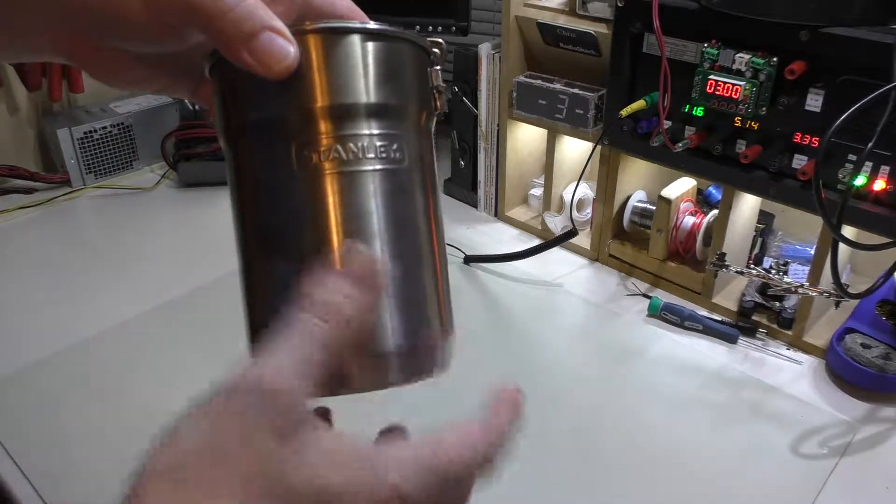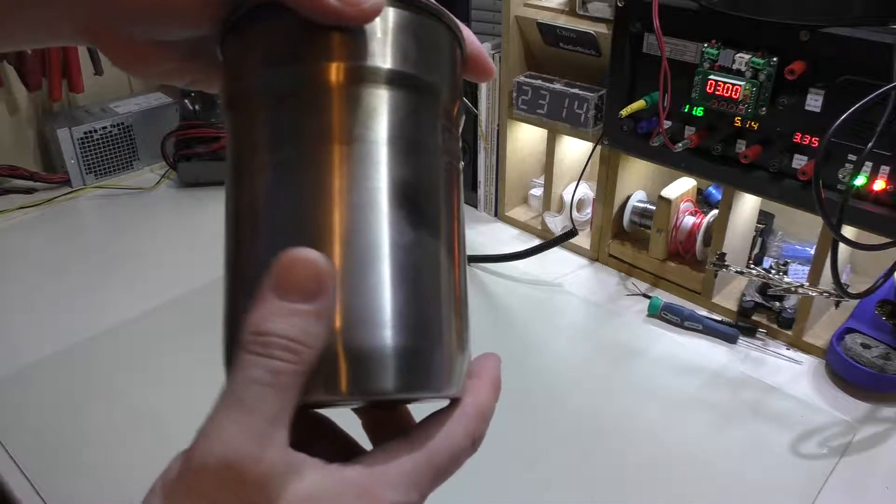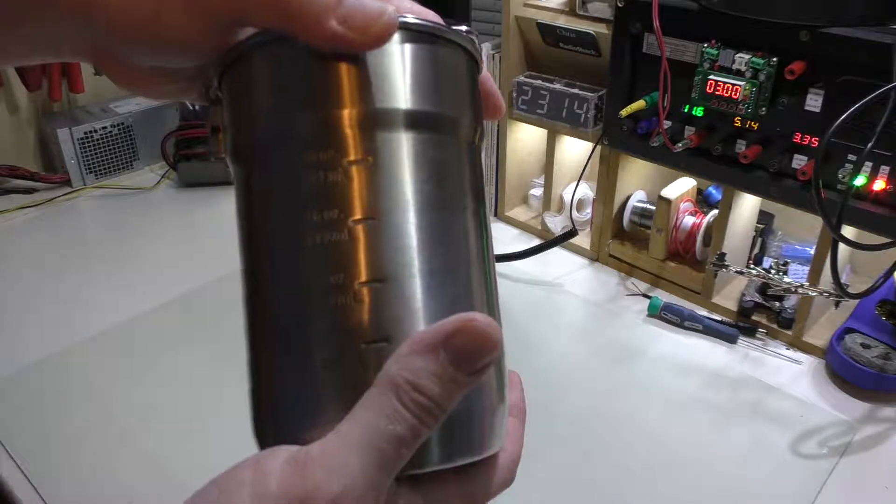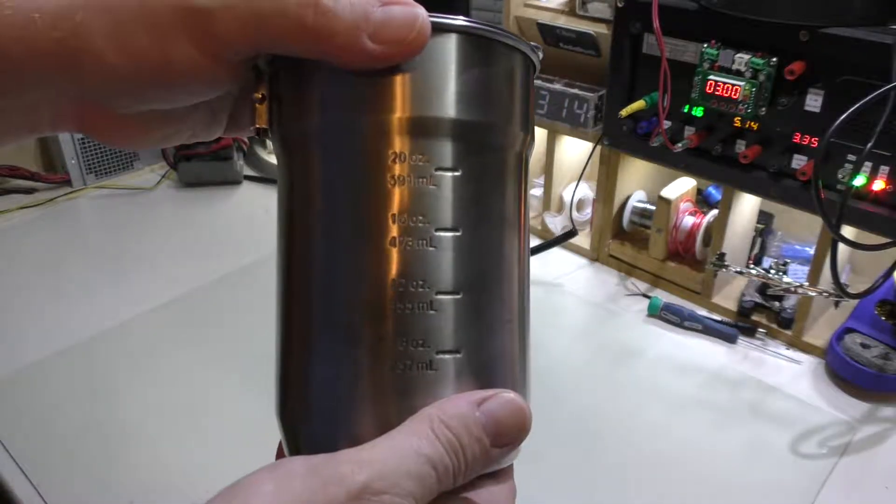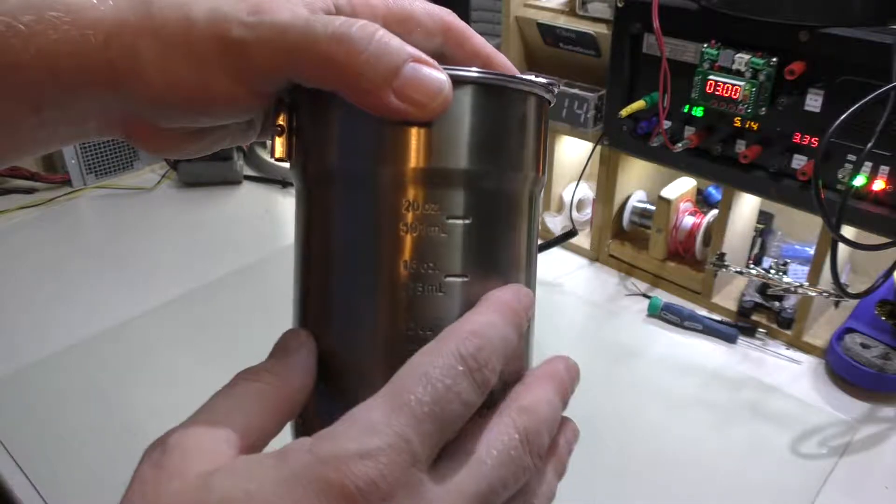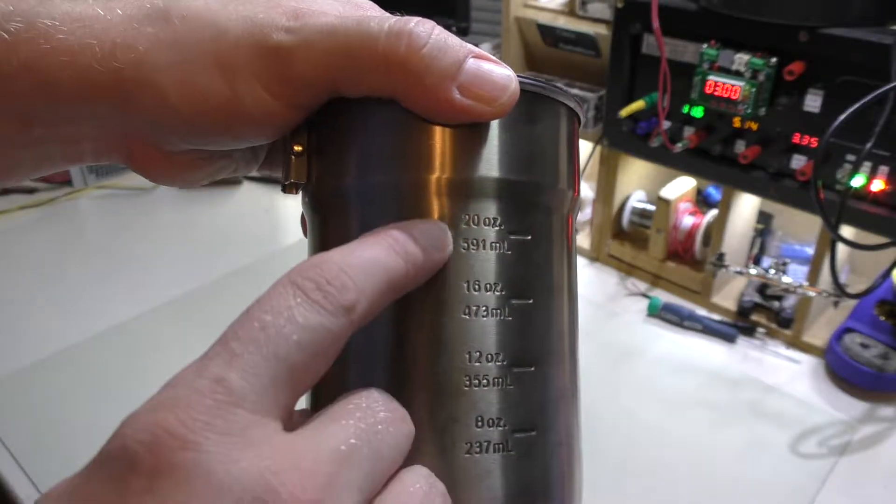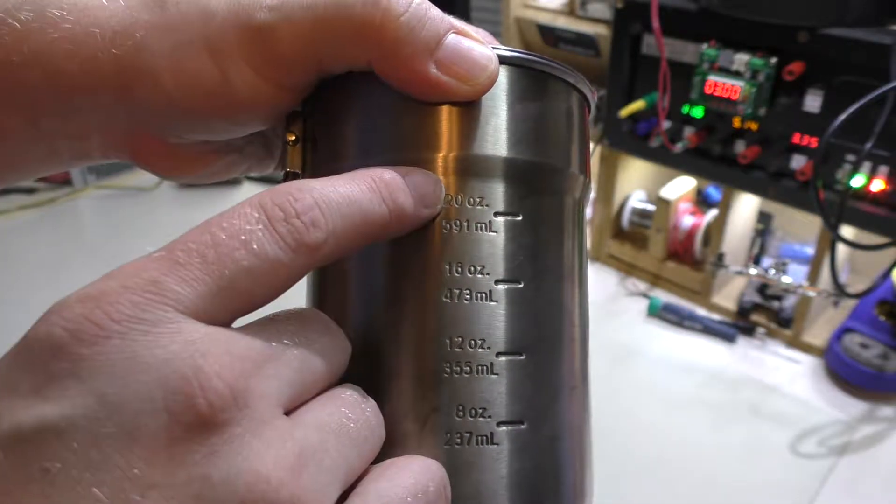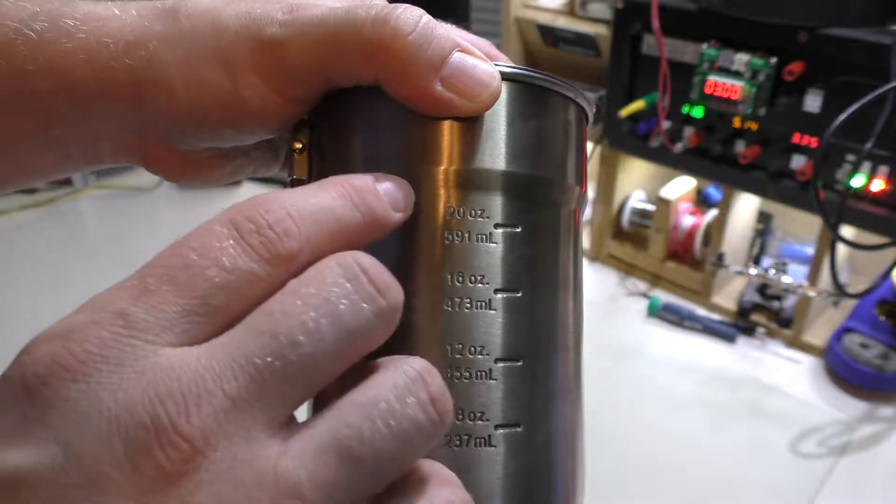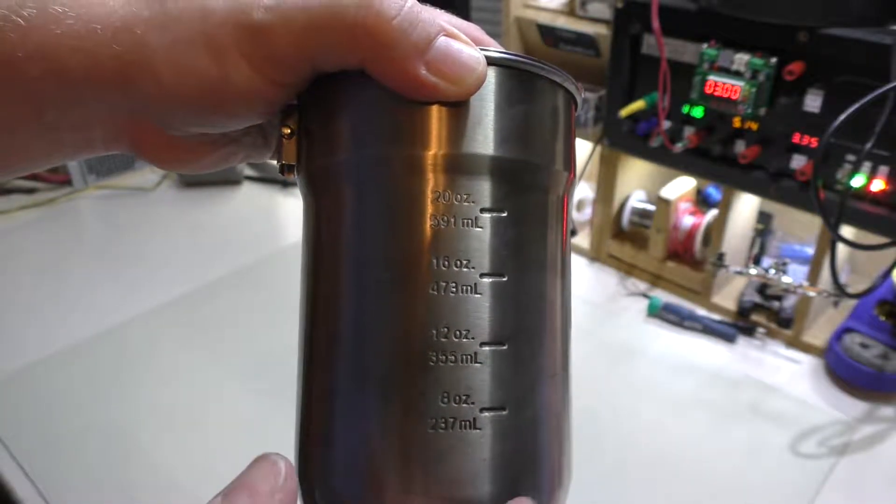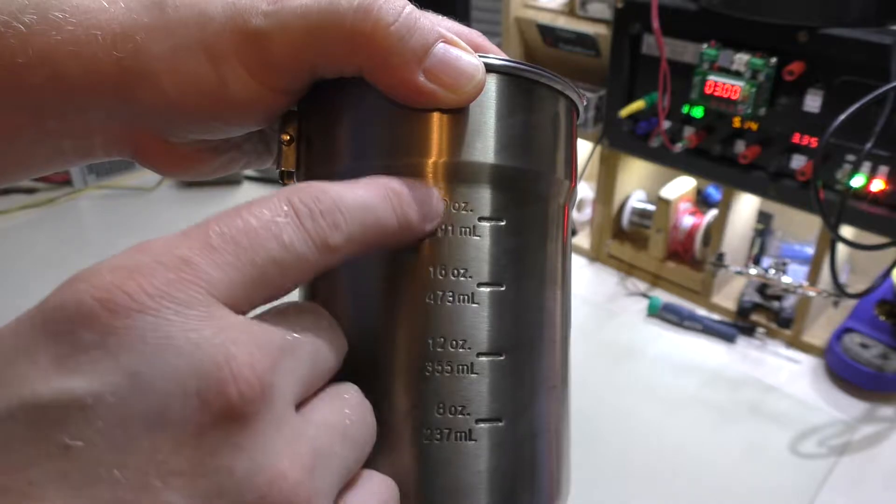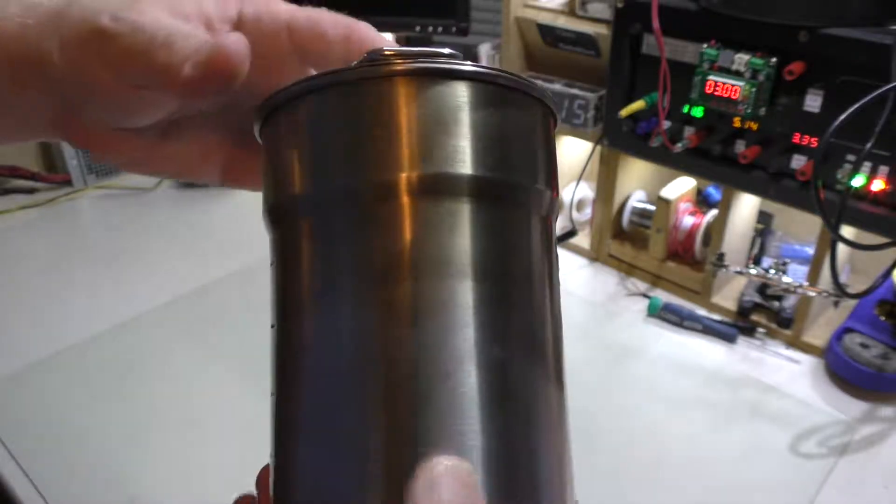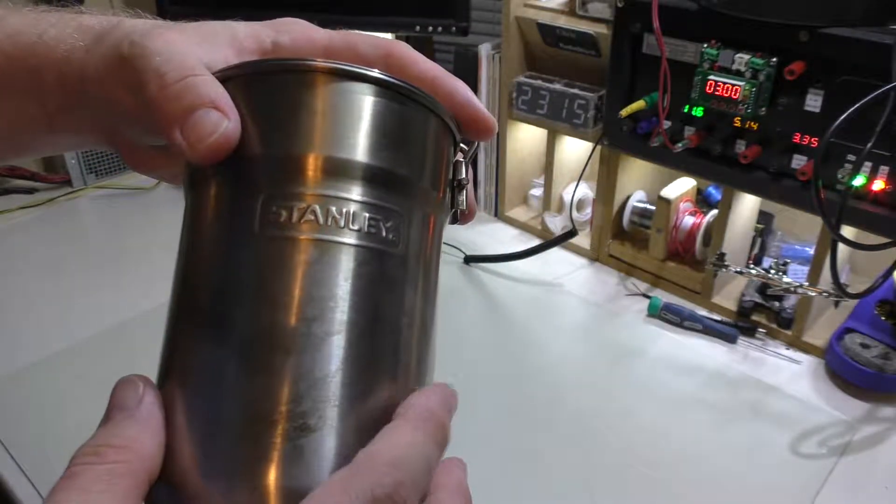And what's great about this particular container here is it's just the right size for me for just the one-man trips, and if I do happen to have a second person, it's doable for two people. You can see inside here it does come with two cups. Outside, it does have graduations up to 20 ounces or 591 milliliters. I can say this is actually rated at 24 ounces for the whole cup, and it is an 18-8 stainless steel.